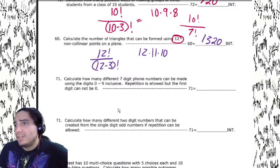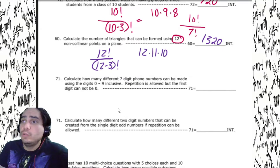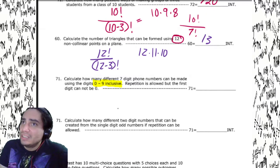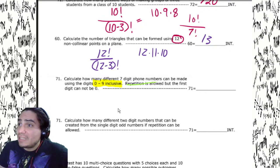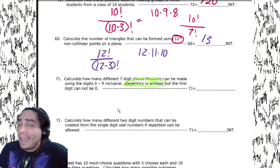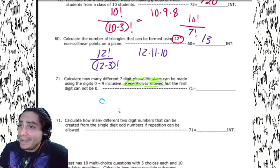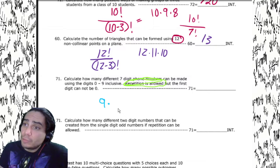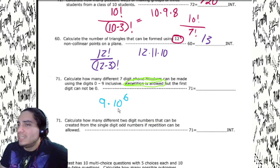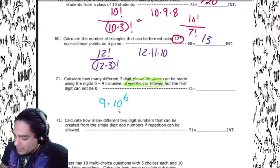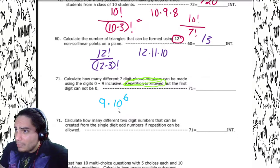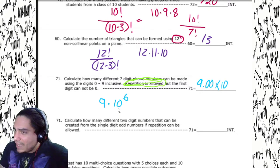Calculate how many different seven-digit phone numbers can be made using digits zero to nine inclusive — repetition is allowed, but the first digit cannot be zero. So we don't have ten choices for the first digit — only nine. Then for the remaining six digits we can include zero, so it's ten choices each: 9 × 10⁶. We hit nine, multiply, and this is not an integer problem — the answer is 9.00 times 10 to the 6th.